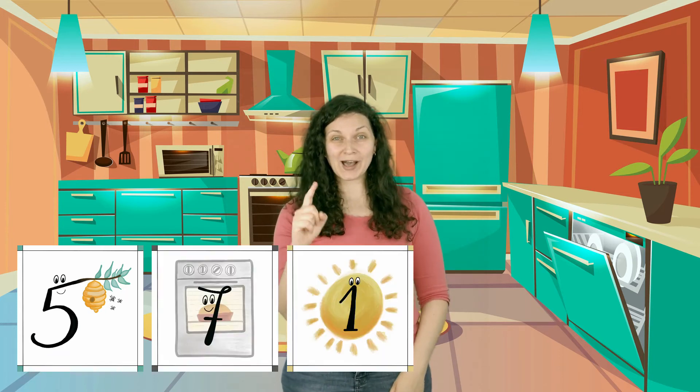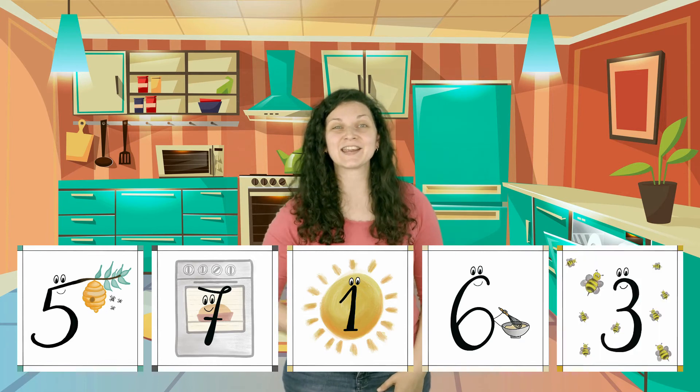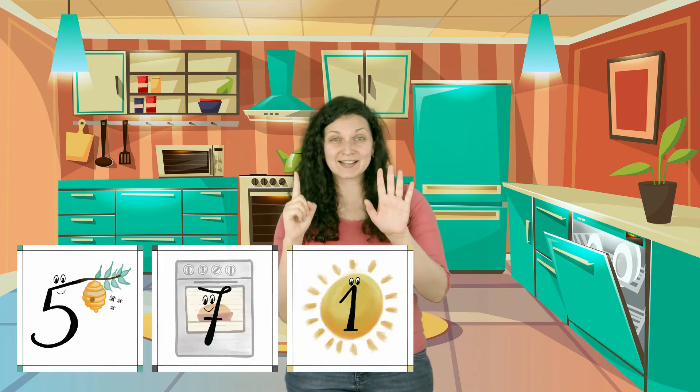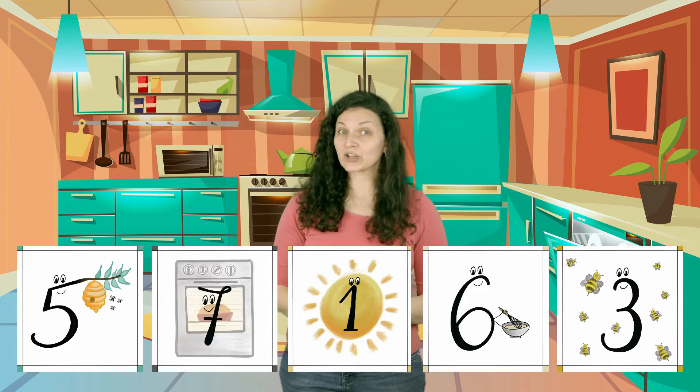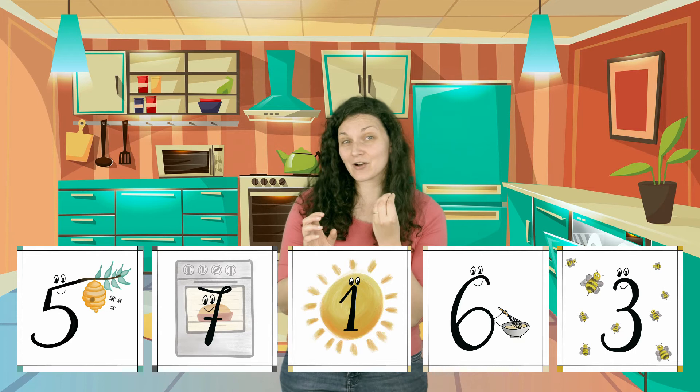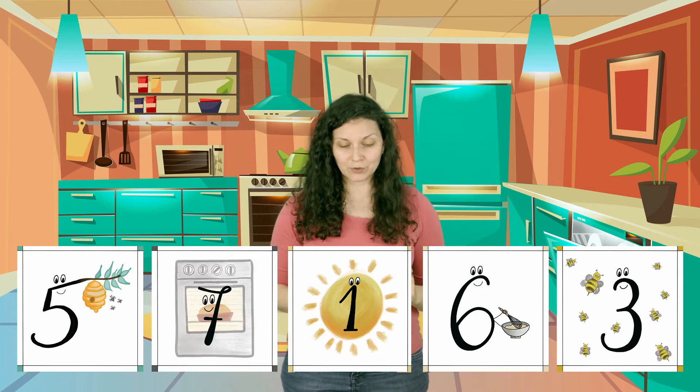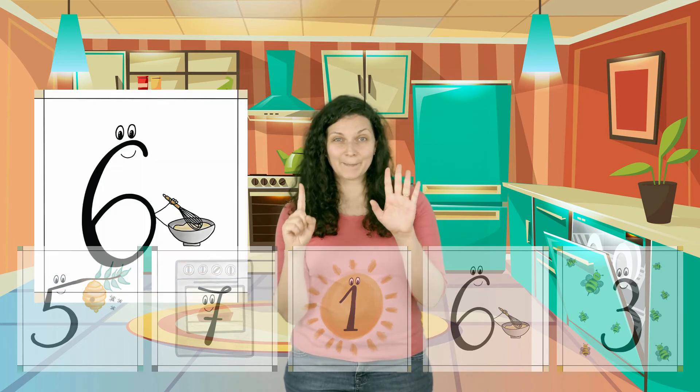All right, let's see if we can read it all. Five, seven, one, six, three. Let's do it again: five, seven, one, six, three. Or if you need to add the name of the image and the number together: five, oven seven, sun one, mix six, three. Good!